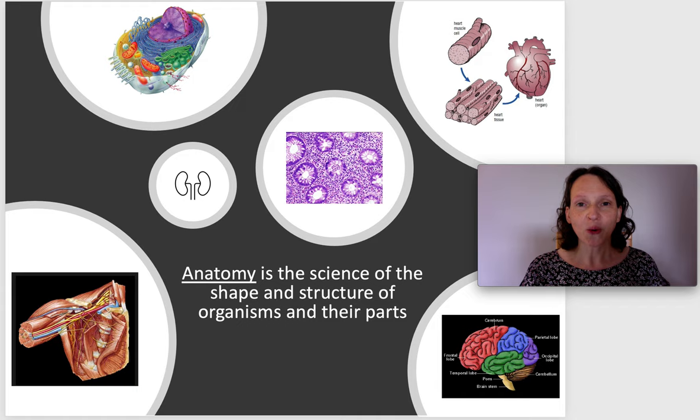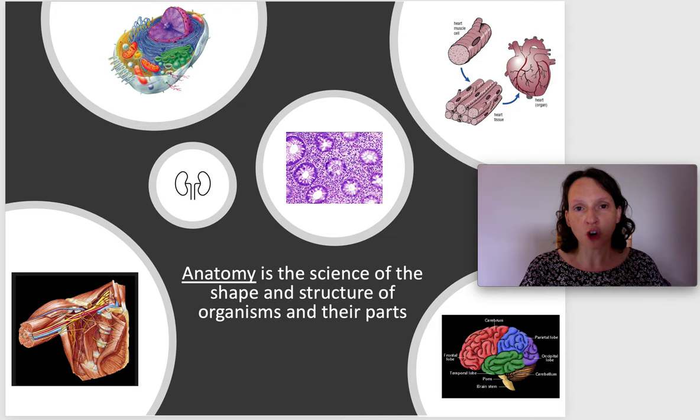Anatomy is the science of the shape and the structure of organisms and their parts. When you think of anatomy you may think about the structure of the human body — the muscles, the bones, the nerves, the blood vessels — and how these are all related to one another in order to allow the body to function.